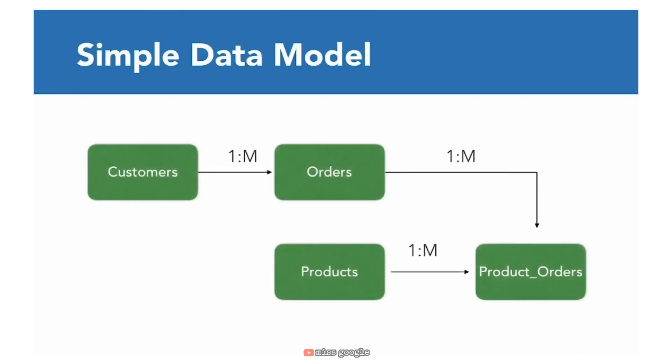For our purposes, we're going to work with a very simple data model. The model has customers — people who make purchases — and when they make purchases, we track those individual instances. We have a table called orders, and an order can contain multiple products. Each item is represented as a product, and a product can be purchased many times. So we need a table to track the intersection of products and orders, which we're calling the product orders table.